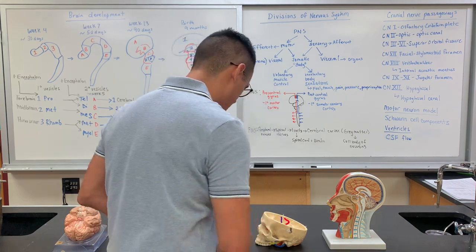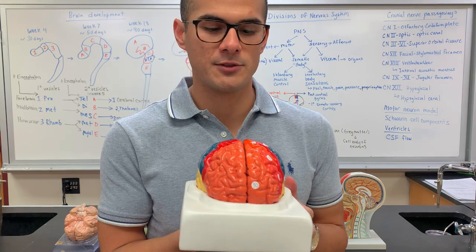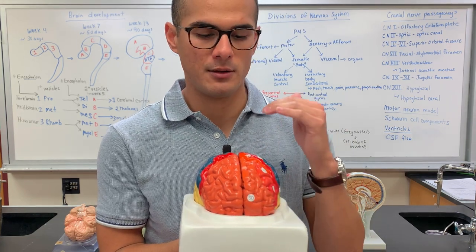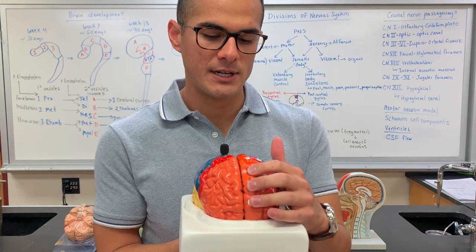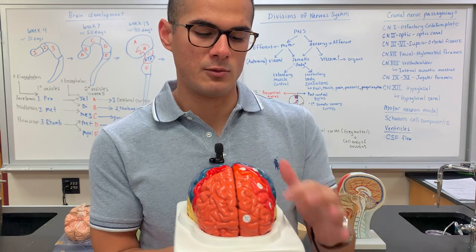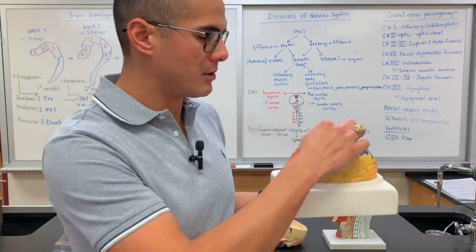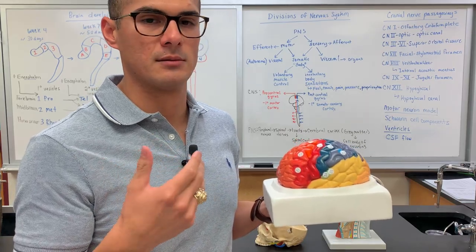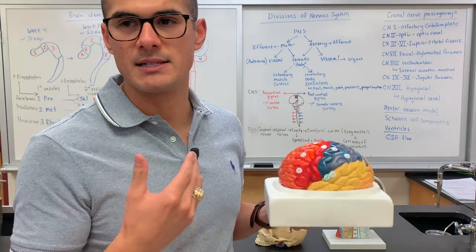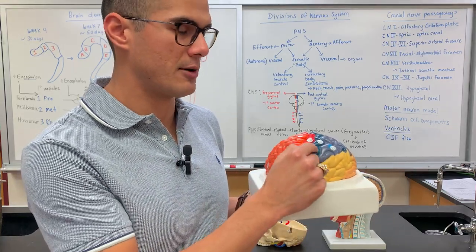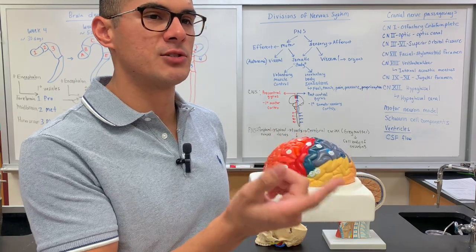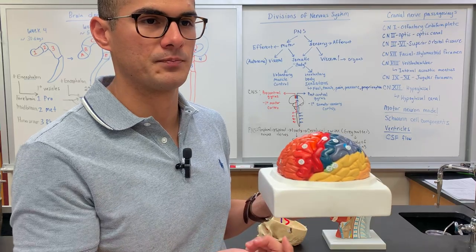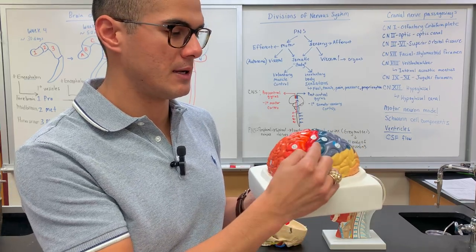Now we want to go over some particular regions and their function. This part is the prefrontal cortex, where thinking happens. Here in red is the precentral gyri, and in blue is the postcentral gyri. Gyri are the elevated parts on the brain. They're named pre- and post-central based on the central sulcus, which divides both of them.